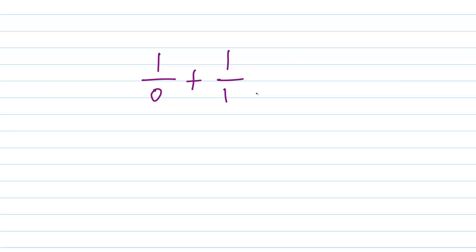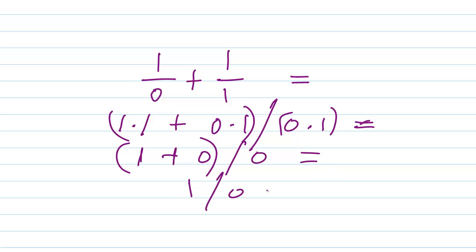Well, that's the same thing as 1 over 0 plus 1 over 1. What's that? Well, it's 1 times 1, this times that, plus 0 times 1, that times that, that quantity, divided by 0 times 1, that quantity. Well, what's that? That is 1 plus 0, divided by 0, which equals 1 over 0.